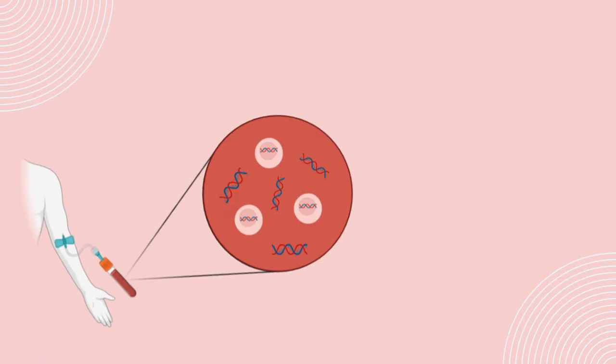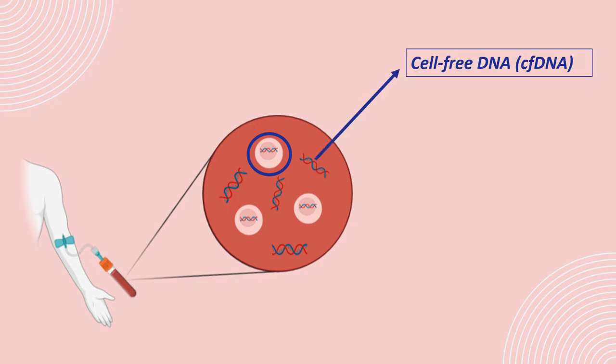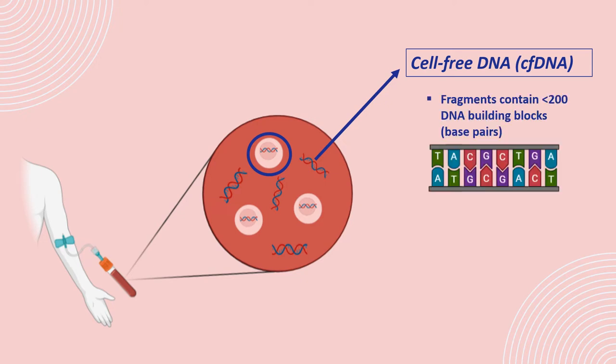This test analyzes small fragments of DNA that are circulating in a pregnant woman's blood. Unlike most DNA, which is found inside a cell's nucleus, these fragments are free-floating and not within cells, and so are called cell-free DNA, or cfDNA. These small fragments usually contain fewer than 200 DNA blocks, or base pairs, and arise when cells naturally die off, releasing their DNA into the bloodstream.